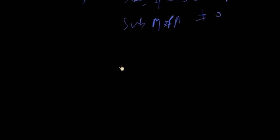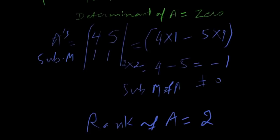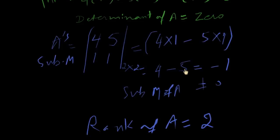So rank of matrix, rank of A will be two, just same as the order whose determinant is not zero. And its rank will not be three. Thank you very much.